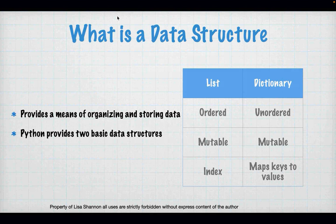A list has specific properties: it's ordered, it's mutable, and it has an index. Ordered means you have things in an order, one after the other, kept in that order by the index value. Strings are, in fact, a list of characters, but you can't change them — you have to create a new string from an old string with the change in it. A standard list you can change, and that's what mutable means: you can change the values, the length, the value inside of it.